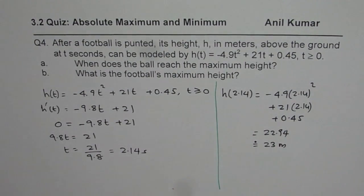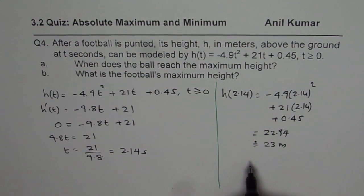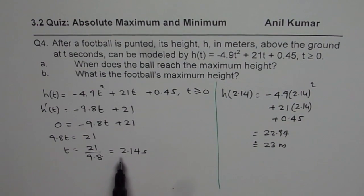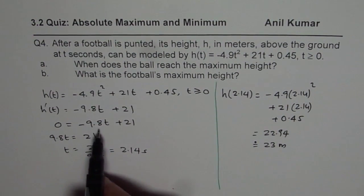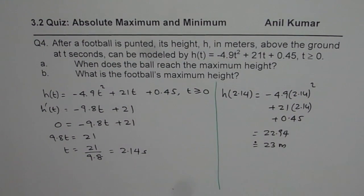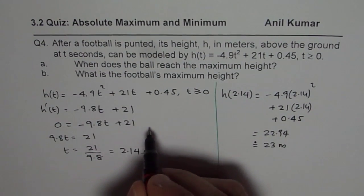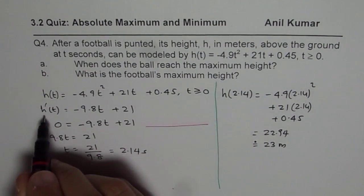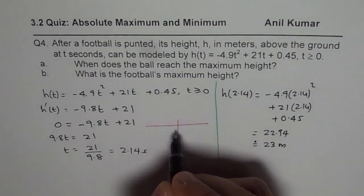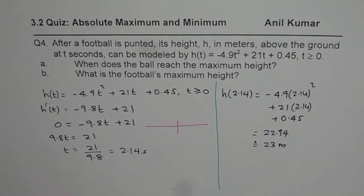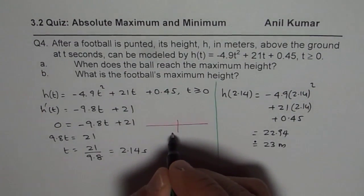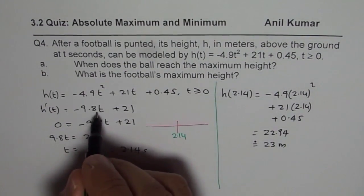Now we need to confirm that t = 2.14 is indeed a maximum. We have a couple of ways to show that. Let us analyze h'(t). We are given a critical point at t = 2.14.